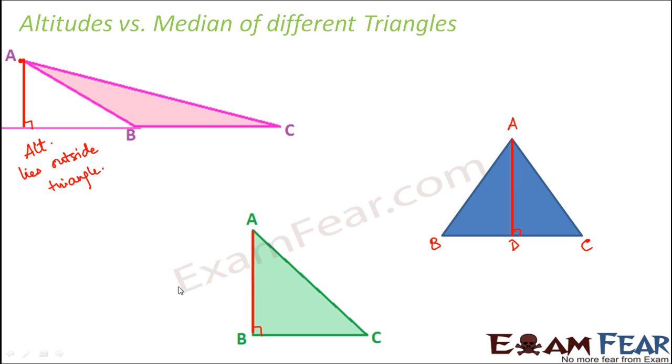In this case what did we observe? In this case we saw that altitude is one of its sides. So one of the sides of the triangle itself is the altitude. So this is the altitude for all these different triangles.